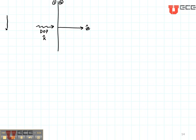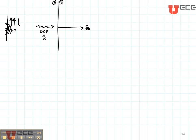Let's say that I made this electric field using an antenna that was held in this direction. The electric field would be propagating out away from this antenna in the Z direction, as you can see, and the electric field would be oriented or polarized in this direction.